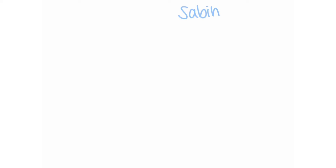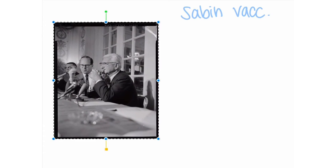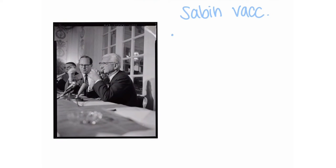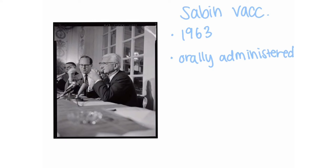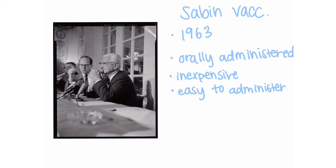The Sabin vaccine first came into use in 1963, shortly after the Salk vaccine. Developed by Dr. Albert Sabin, its popularity skyrocketed. As opposed to injection, it was administered orally. Because it was inexpensive and relatively easy to administer, the oral polio vaccine quickly became the preferred vaccine, so it is now called OPV, or oral polio vaccine.